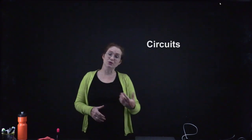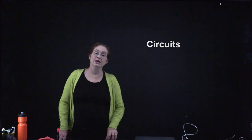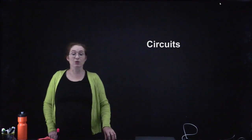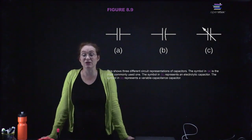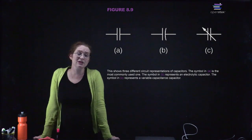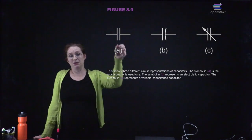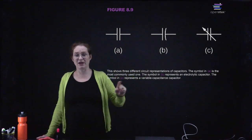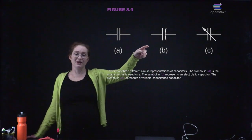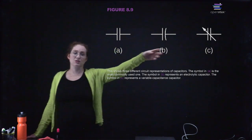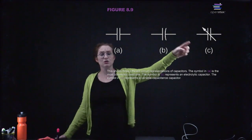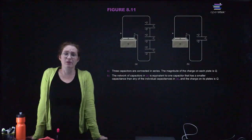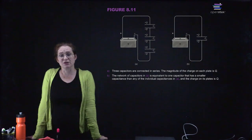When we have these capacitors, often what we want to do is combine them into circuits. We're going to talk about how you combine capacitance in serial and parallel. Here you can see three different representations of capacitors that you might see on circuit diagrams: the most common symbol, an electrolytic capacitor symbol, and a variable capacitor. We often combine capacitors in different ways — we talk about capacitors which are in series and in parallel.